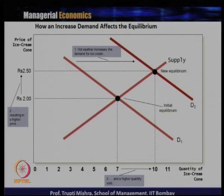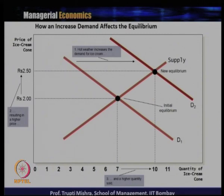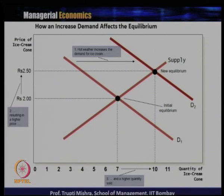Now we will see what happens when there is a change in demand and in supply. With equilibrium initially at 7 units and 2 rupees, suppose demand increases — for example, hot weather increases the demand for ice cream. Demand increases from D1 to D2 and the change in quantity demanded is from 7 units to 10 units. Since there is more demand, the supplier will increase the price. Price increases from 2 rupees to 2.5 and quantity also increases from 7 units to 10 units. If supply remains constant and demand increases, that leads to an increase in both price and quantity.